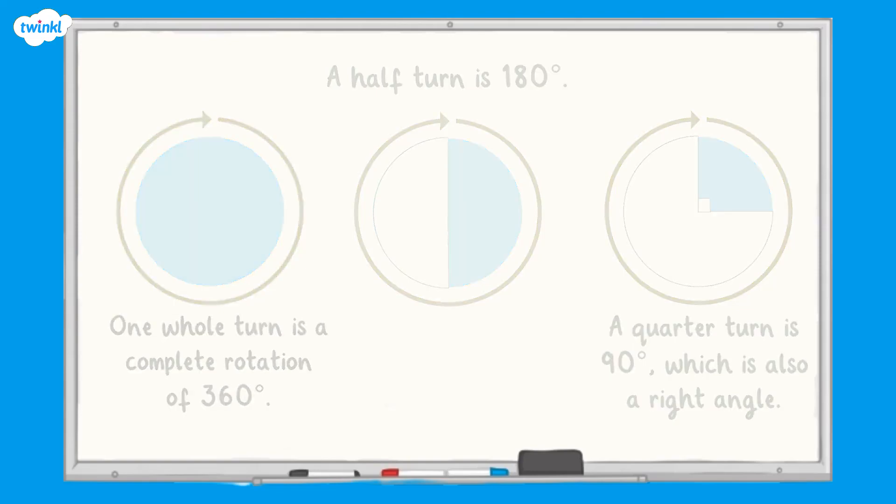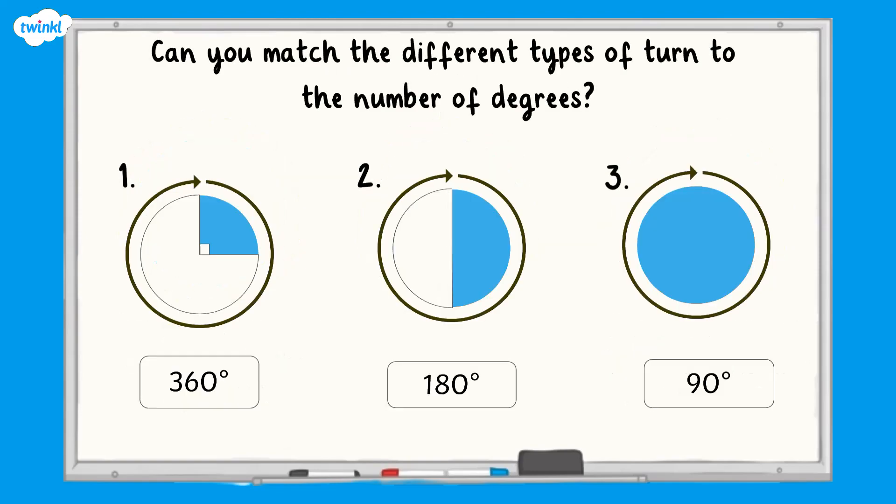Let's see what you can remember so far. Can you match the different types of turn to the number of degrees? Pause the video whilst you have a go. How did you get on? Turn 1 is equal to 90 degrees. Turn 2 is equal to 180 degrees. Turn 3 is equal to 360 degrees.